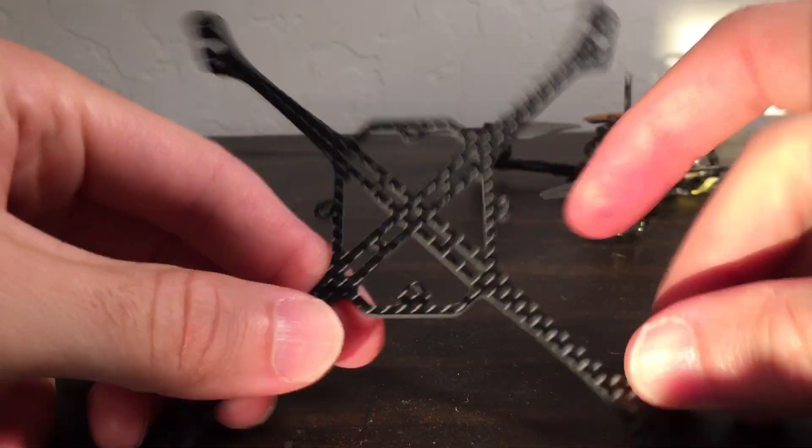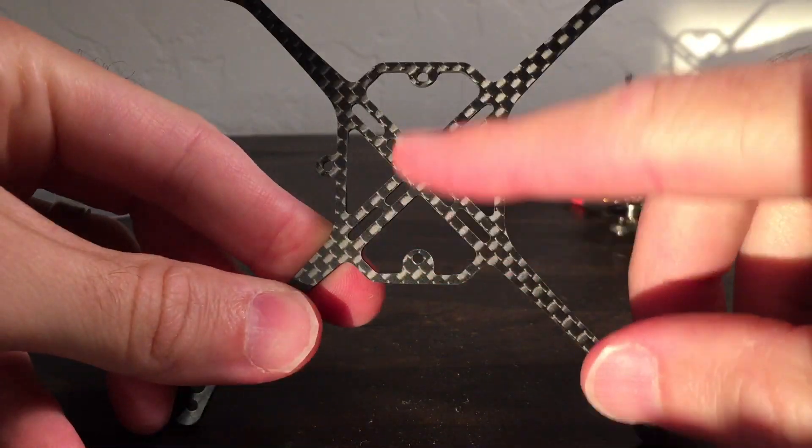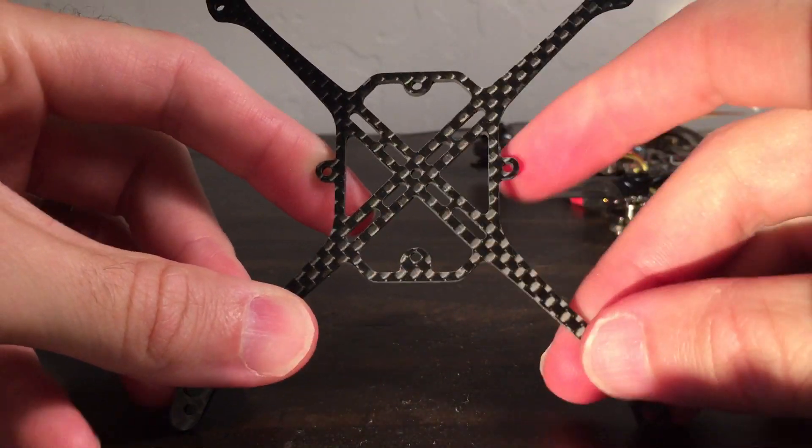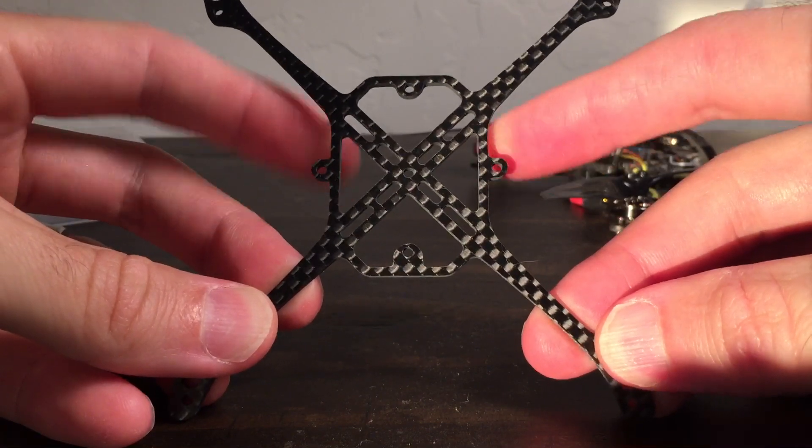But what you can see here is instead of having, so when we're doing diamond orientation, instead of just having the top and the bottom screw holes, now I've got the side ones also.